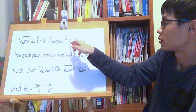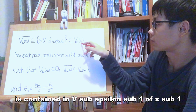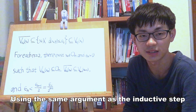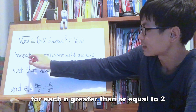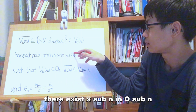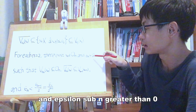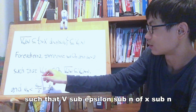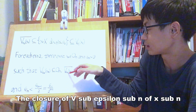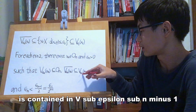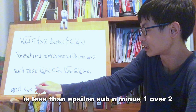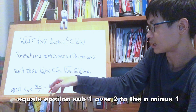The closure of V_epsilon_2(x_2) is contained in V_epsilon_1(x_1). Using the same argument as the inductive step, by induction we can show that for each n greater than or equal to 2 there exists x_n in O_n and epsilon_n greater than 0 such that V_epsilon_n(x_n) is contained in O_n, the closure of V_epsilon_n(x_n) is contained in V_epsilon_{n-1}(x_{n-1}), and epsilon_n is less than epsilon_{n-1} over 2, which equals epsilon_1 over 2^{n-1}.